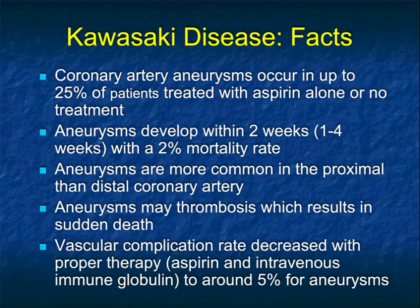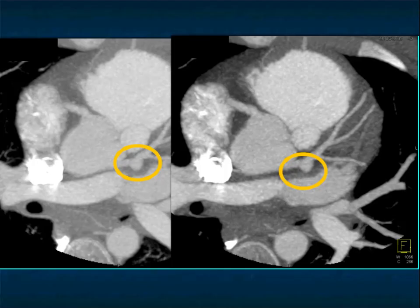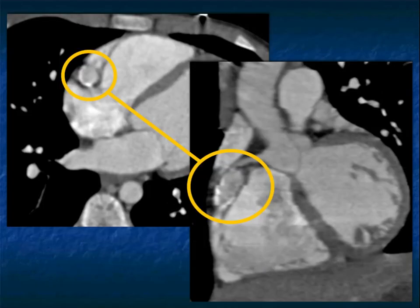There was a panic early in the COVID era when a cluster of Kawasaki cases appeared in New York and there was concern COVID infection was driving Kawasaki's — fortunately, that was not the case. Here's a nice example of an 8mm aneurysm of the left main coronary artery in an 11-year-old, about 10.5 years after the original diagnosis. You can see the aneurysm; there's no calcification in this one, but aneurysm calcification can occur. The aneurysms can be large and multiple.